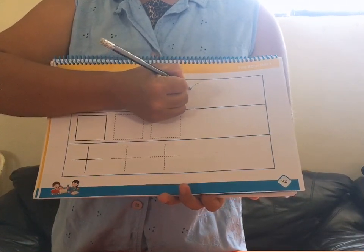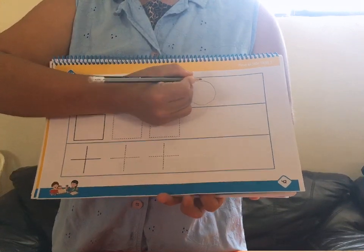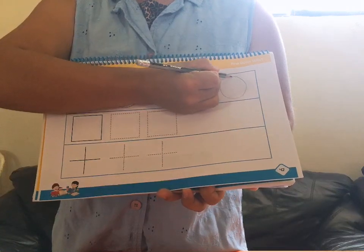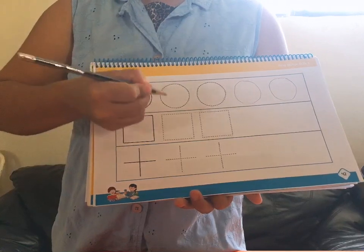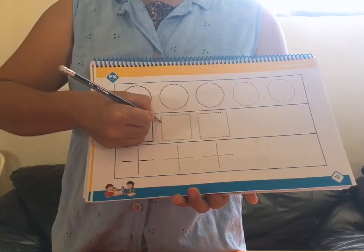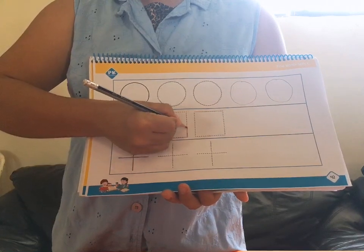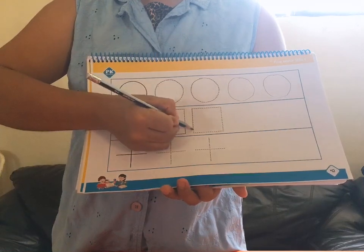Now let's do the square. You start from top: down, right, up, left. Top, down, right, up, left. From the top: down, right, up, left. One more time from the top: down, right, up, left.